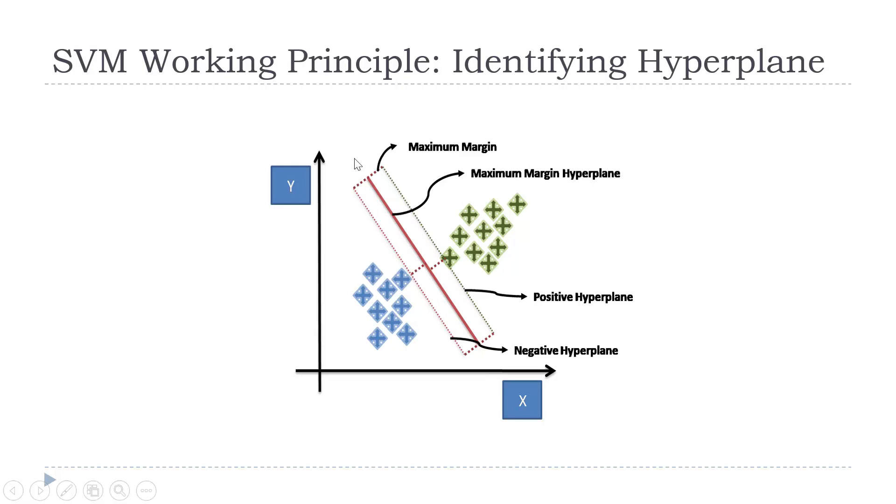These two points are called vectors. The whole algorithm is supported by those vectors, so that's why it is called Support Vector Machine.